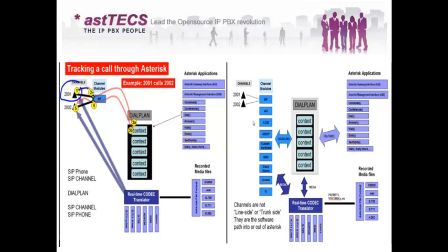If this call is being recorded, then the File Format API comes in — determining where, how, and in what format to record the conversation between 2001 and 2002. What is actually happening is we are using the Channel API for the channel module and the Asterisk Application API in the dial plan. If 2002 is not available, after the Dial application we may use the voicemail application — so the Asterisk Application API is used again. Once the call is connected we move to the Codec Translation API and then the File Format API.